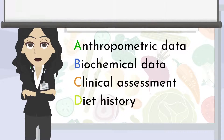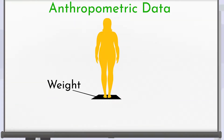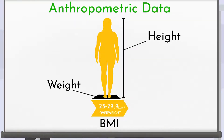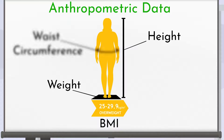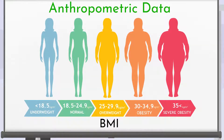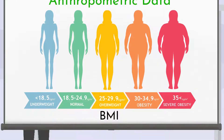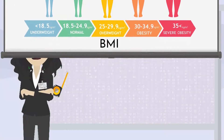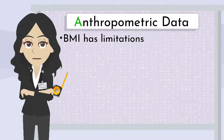Anthropometric data uses body measurements including weight, height, calculation of body mass index, and waist circumference. For the general population, a BMI greater than or equal to 25 kg/m² is considered overweight, and a BMI greater than or equal to 30 kg/m² is considered obesity. BMI has limitations in assessing adiposity in individuals with increased muscle mass, decreased muscle mass, and for different races.